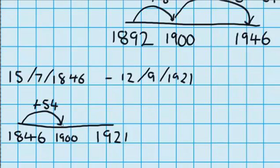And then from there, just like last time, it's really easy for me to jump up to 1921. That's a jump of 21 more years, which means in total I jumped 54, plus another 21 years, which means I jumped up 75 years.